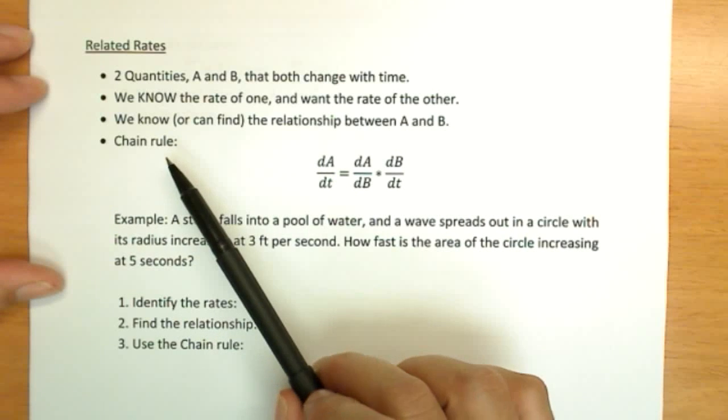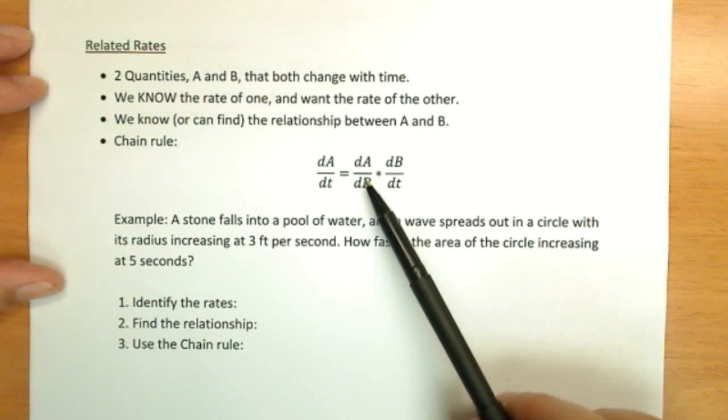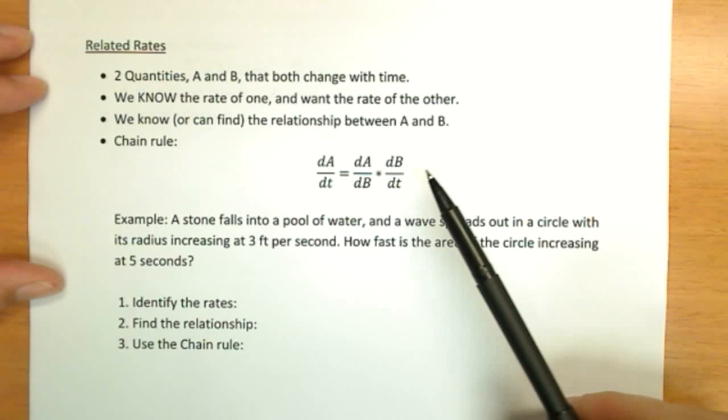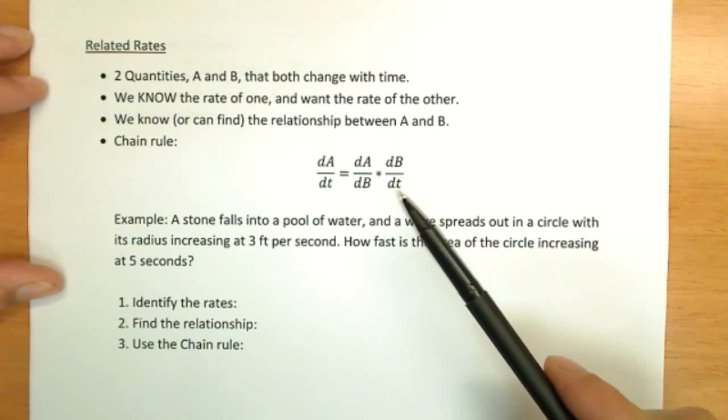So what we're going to use is a version of the chain rule. dA/dt is equal to dA/dB times dB/dt. And to remember this version, to make sure you get it the right way,